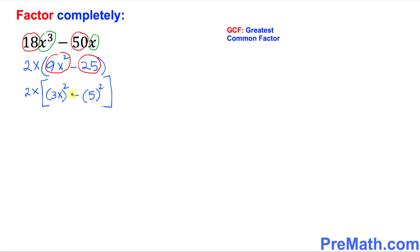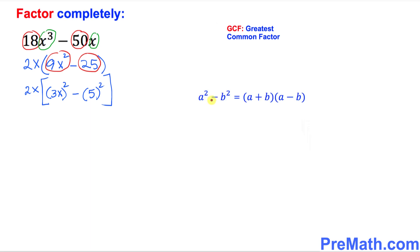So we're going to use this formula. It states the difference of 2 squares equals the product of sum and the difference. In our case, this 3x I can write as an a, and then 5 as a b. So this simply becomes a square minus b square.